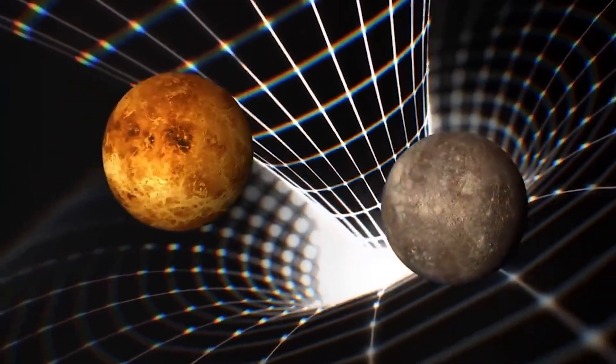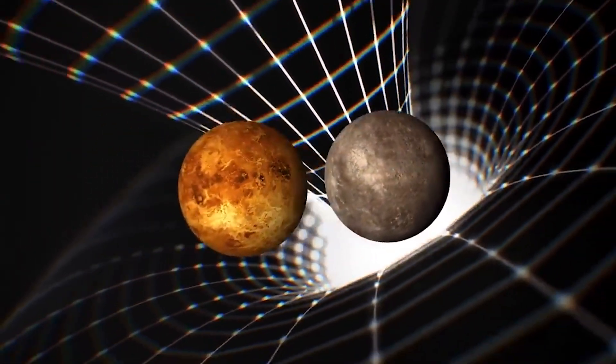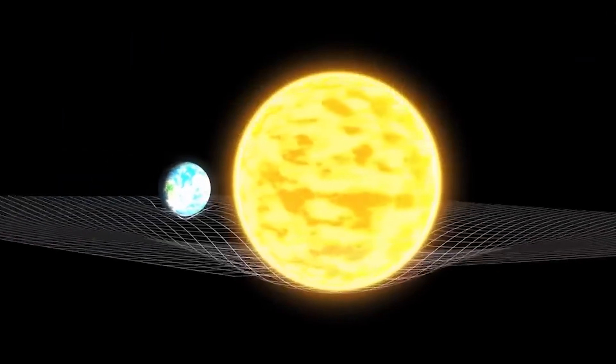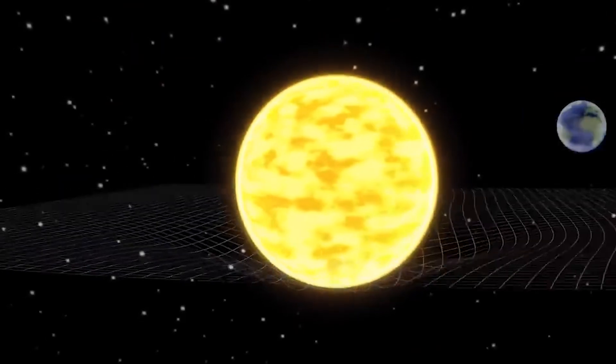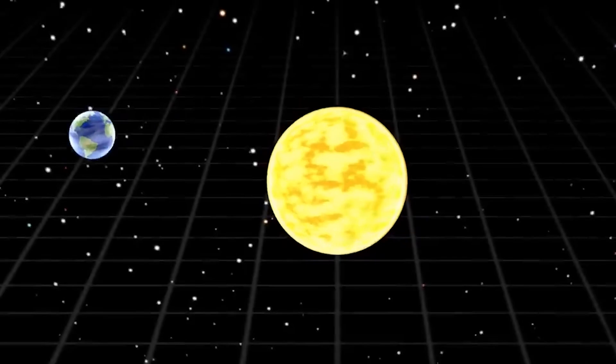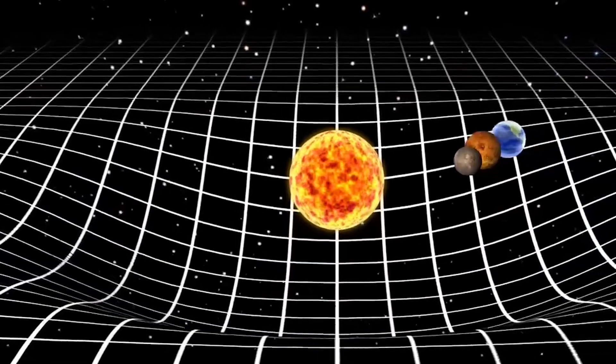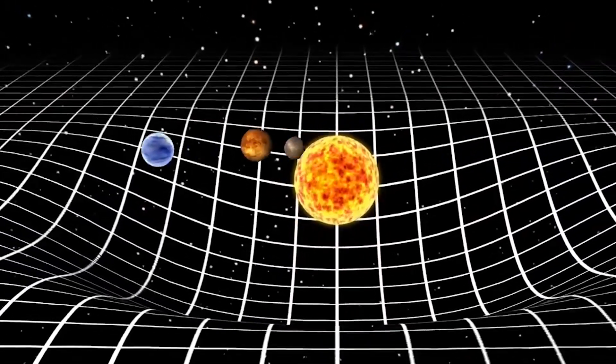Picture spacetime as a giant sheet of fabric. When you place a heavy object, like a planet, on the fabric, it creates a curve. Smaller objects naturally move along this curve, and this is what we perceive as gravity. But here's the twist: this curvature also affects time.